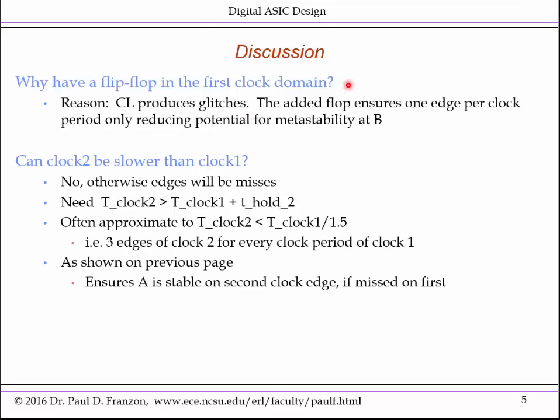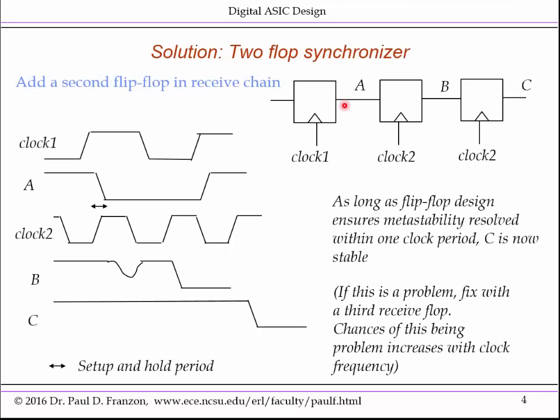Now you might ask, why have a flip-flop in the first clock domain? Why not just come from logic? The reason is this flip-flop ensures that A is glitch-free — it only changes once per clock cycle. If this was combinational logic instead, then A would change potentially multiple times per clock cycle: as the fast paths resolve, A changes value; as the slow paths resolve after that, A changes value again. Thus you get multiple edges in A, making you more likely to sample one of those edges in clock two and more likely to have metastability behaviour with even more uncertainty in the timing relationships.